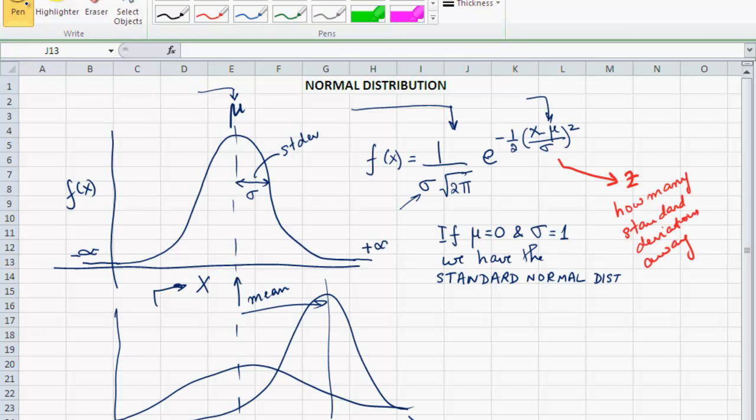The higher the standard deviation, the more the spread, the fatter the bell curve and the squatter. And the higher the mean, the more laterally shifted it is to the right.